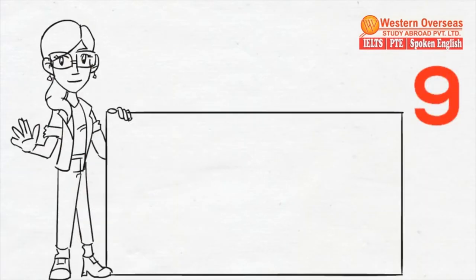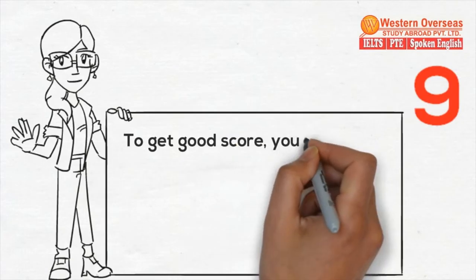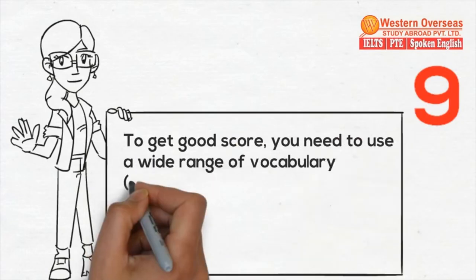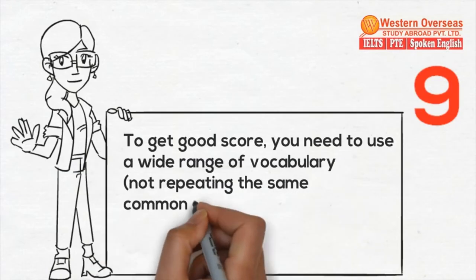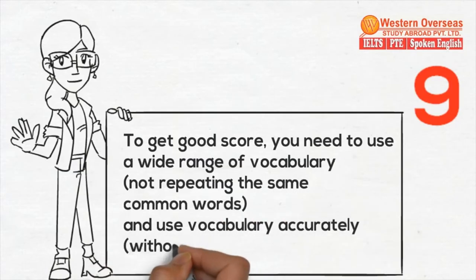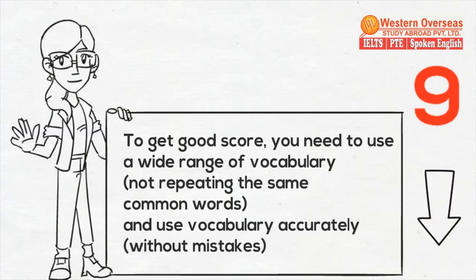Tip number nine: to get a good score, you need to use a wide range of vocabulary, not repeat the same common words over and over, and use vocabulary accurately — that is, without any mistakes.